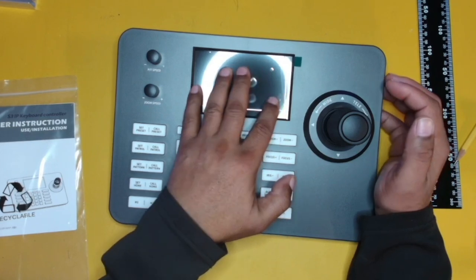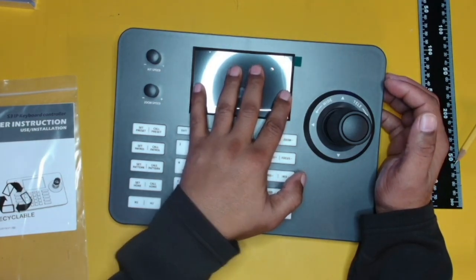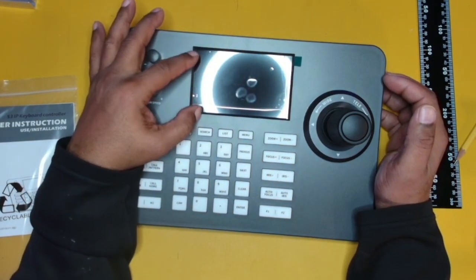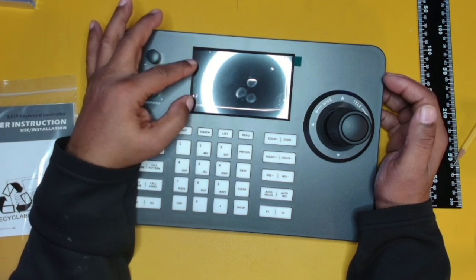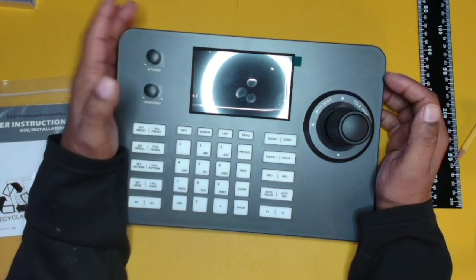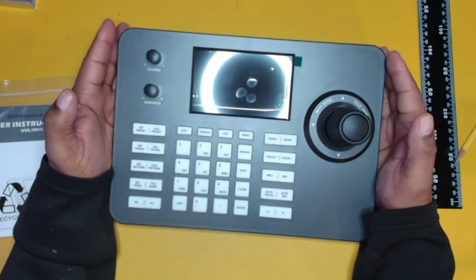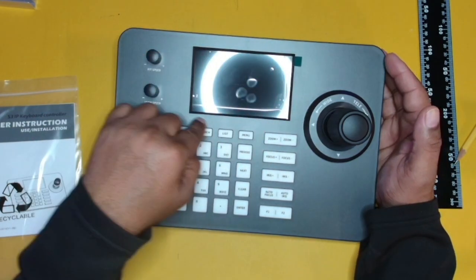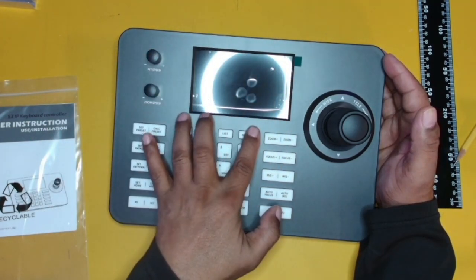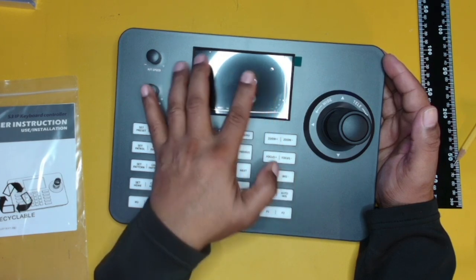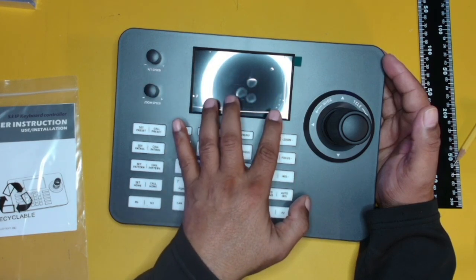Now, this also comes with a screen. The screen for this device is going to allow you to actually see through your camera. So that means you do not have to have an additional monitor connected to this. Once your cameras are set up on the network, you'll actually be able to log into each camera and view right here on this screen whatever is being seen from the cameras.